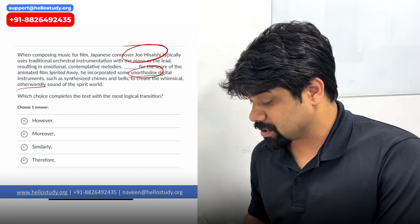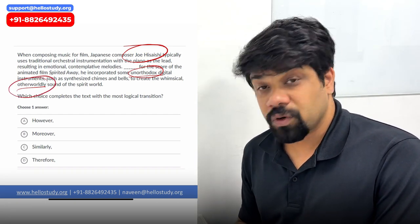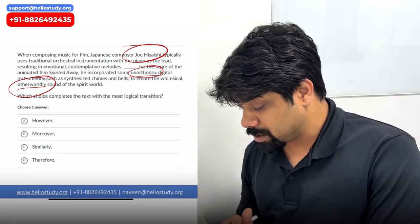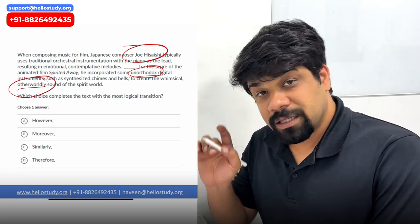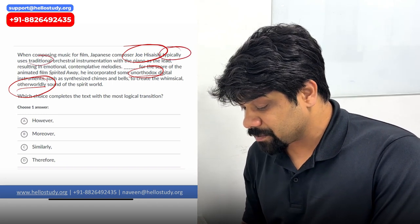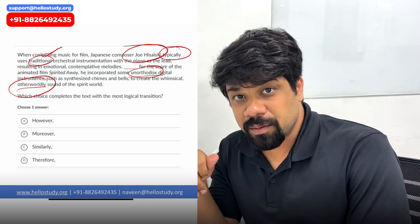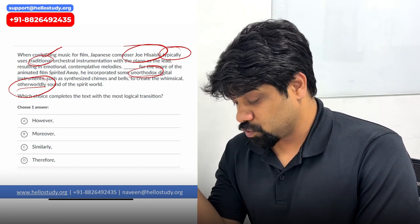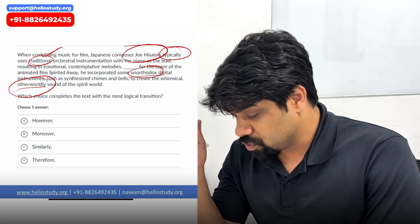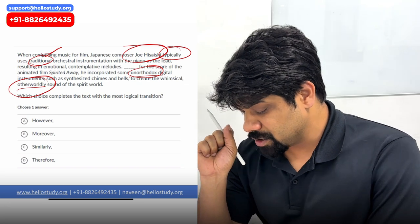In the second part, the composer is creating unorthodox, otherworldly music. Comparing with the first part: the composer typically uses traditional orchestration, and in the second part he is using unorthodox instruments — something which is the opposite of traditional. So we are looking for a keyword of contrast here.